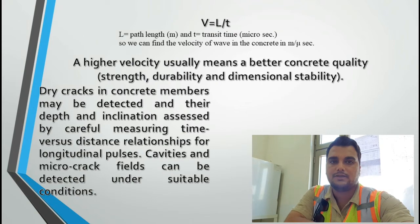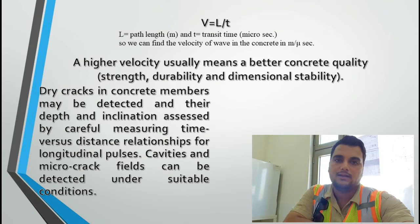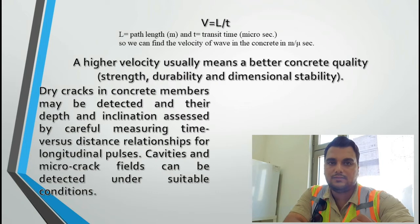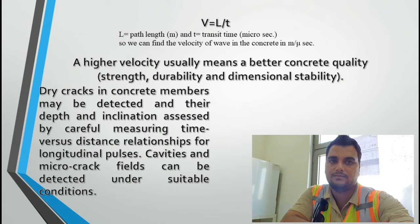The following correction is recommended by Ryan and British Standards for measuring velocity. We have the equation V equals L over T, where V equals velocity, L (capital) is the path length in meters, and T (small t) is the transit time in microseconds. So we can find the velocity of the wave in concrete in meters per microsecond.